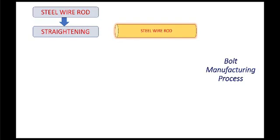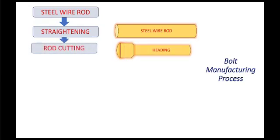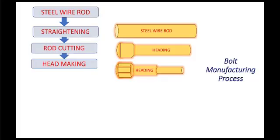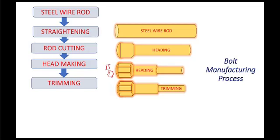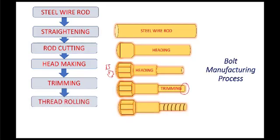Let's see the bolt manufacturing process. First of all, we need to take a steel wire rod. And we should make it straight. Because the number of rods, there is a chance for a bend also. So, we need to make straightening. After that, our rod cutting. For cutting we need to make. So, head we should make head. And trimming. After cutting, we need to make trim at the edges. Then thread rolling. Finally, we will get finished bolt.